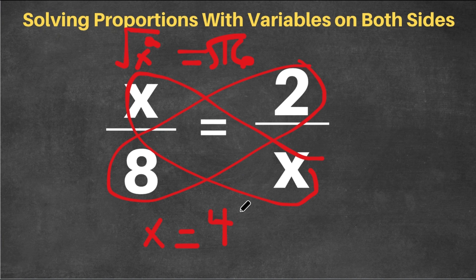Square root of 16 is 4. So x equals 4. This is our answer for this proportion.